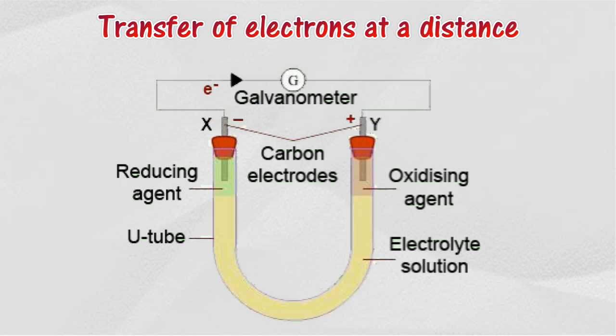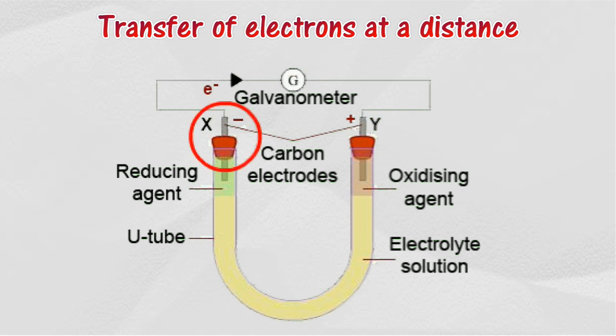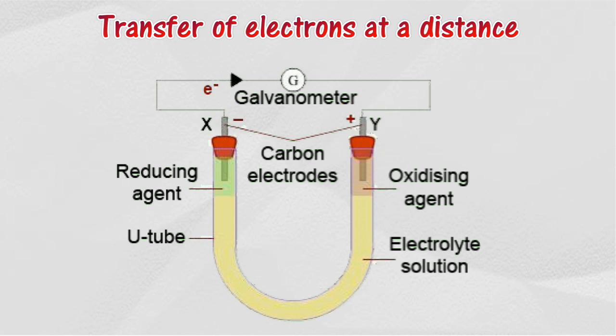Electrons transfer from the reducing agent to the oxidizing agent through a connecting wire. The carbon electrode immersed in the reducing agent acts as the negative terminal, and the carbon electrode immersed in the oxidizing agent acts as the positive terminal. The deflection of the galvanometer needle shows the electrons flowing.